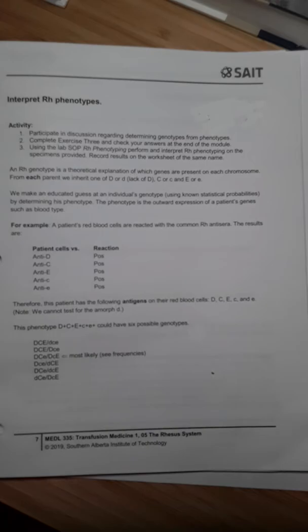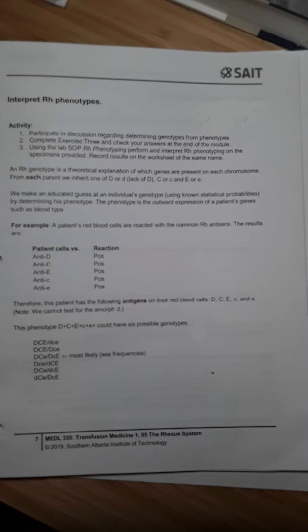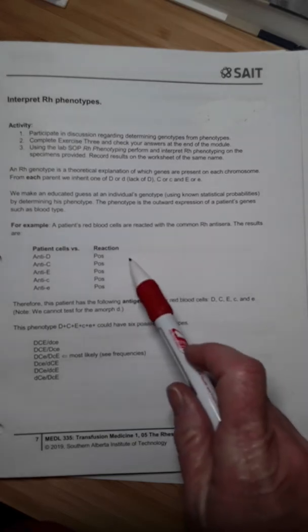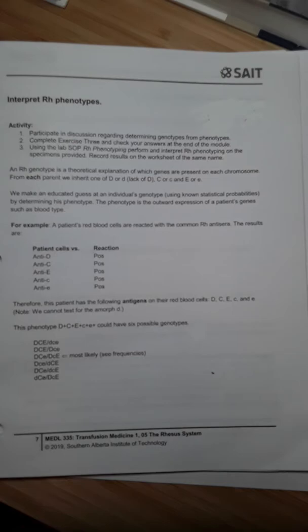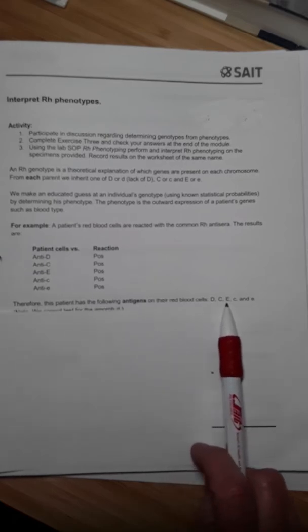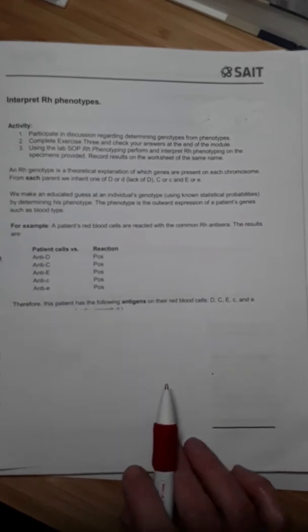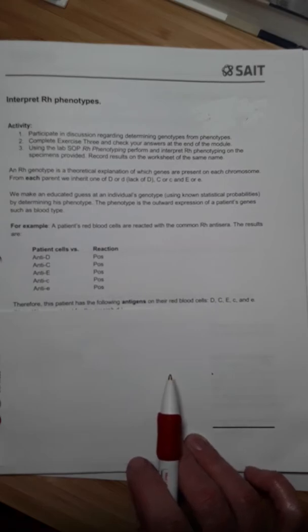In this example, a patient's red blood cells have been reacted with common RH antisera. Their red cells were reacted with anti-D and the reaction is positive, so agglutination, and the same with big C, big E, little c, and little e. Therefore, on the patient's red blood cells they have D, C, E, little c, and little e. Let's work together to figure out what the possible genotypes are of this patient and what the most probable genotype is.